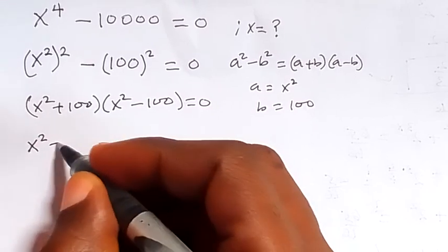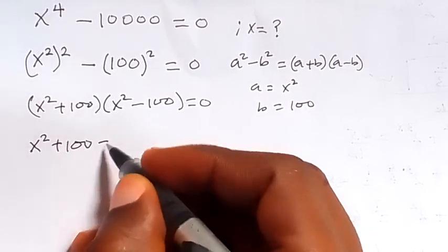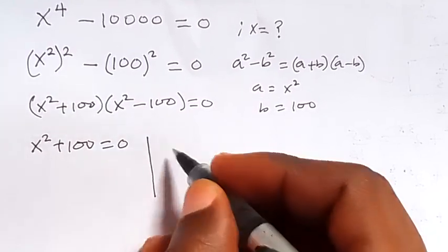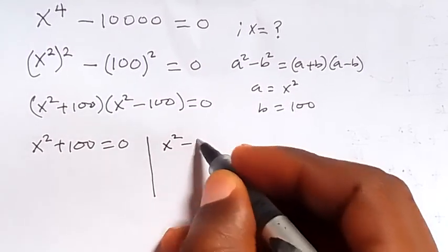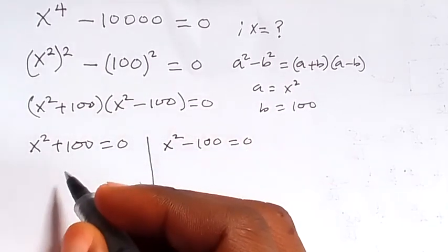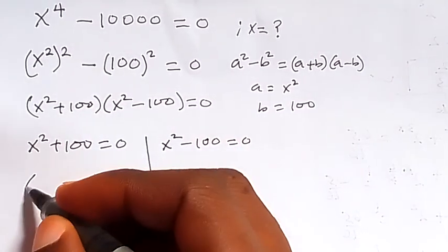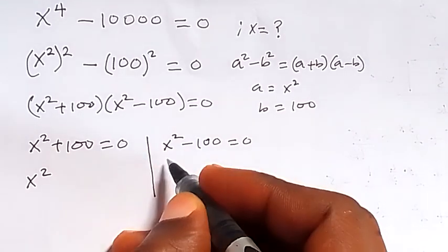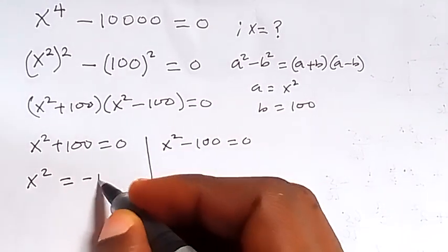Then we have two cases here: x squared plus 100 equals 0, or we have x squared minus 100 equals 0. When we solve from here for x, we have x squared equals negative 100.